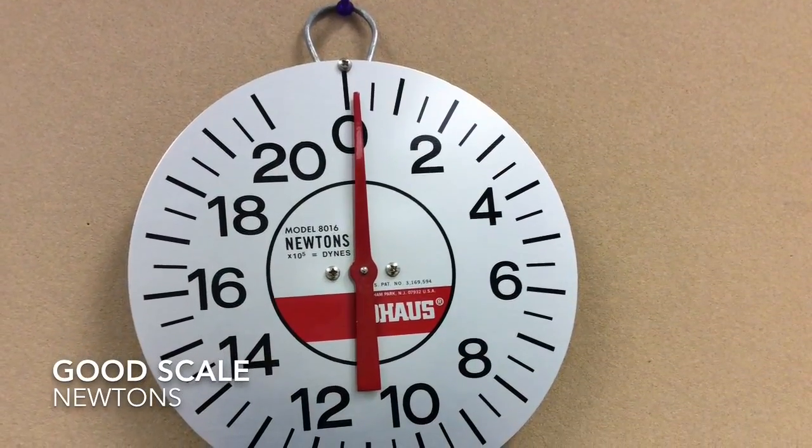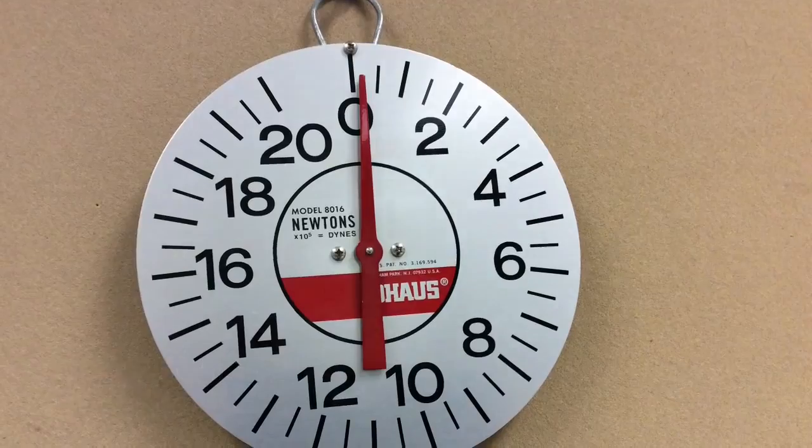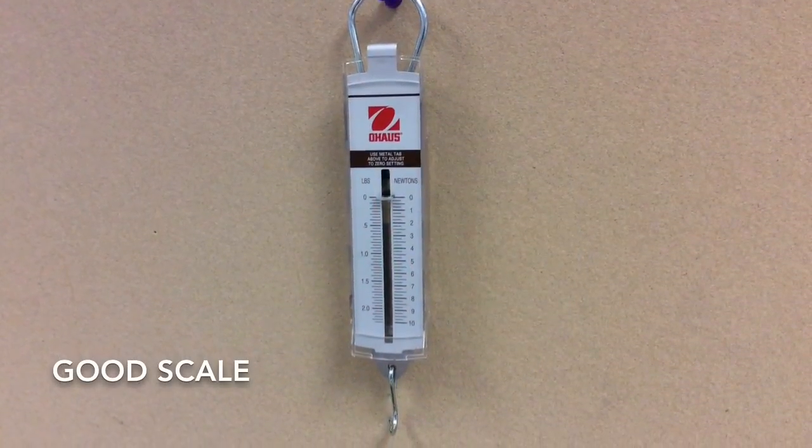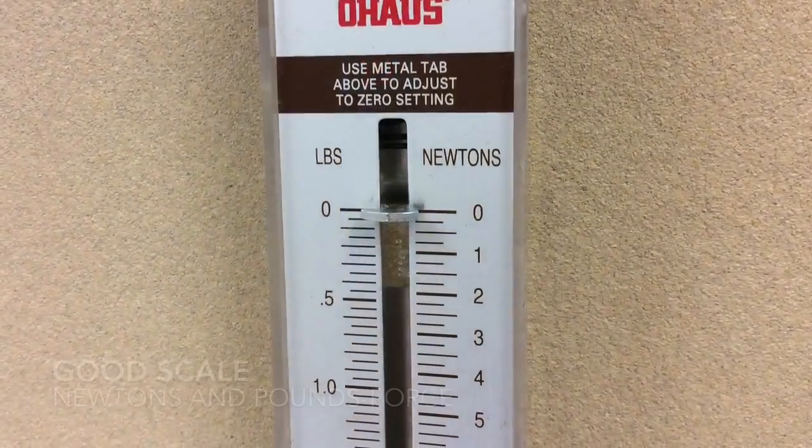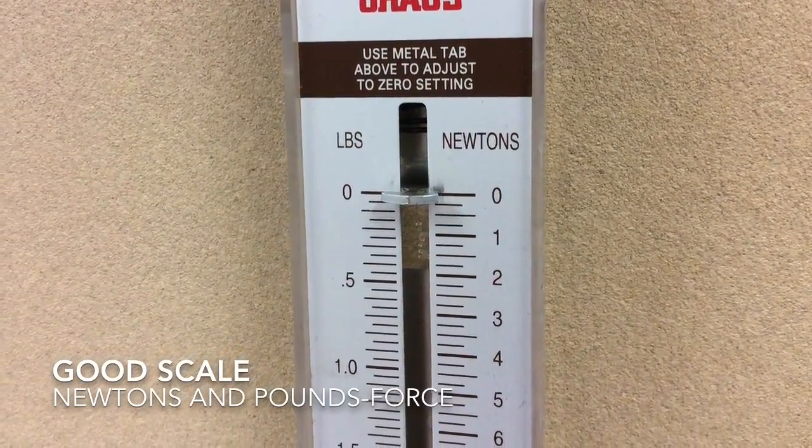Here's one example of a scale. It's a good scale, measured in newtons. Here's another example of a scale. It's another good scale. The units are pounds force in the English system, newtons in the metric system.